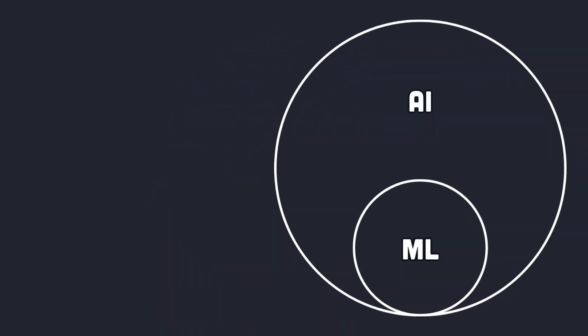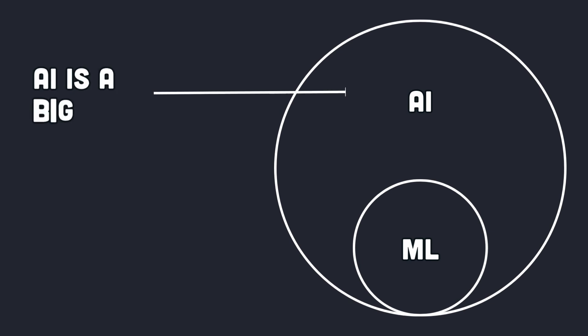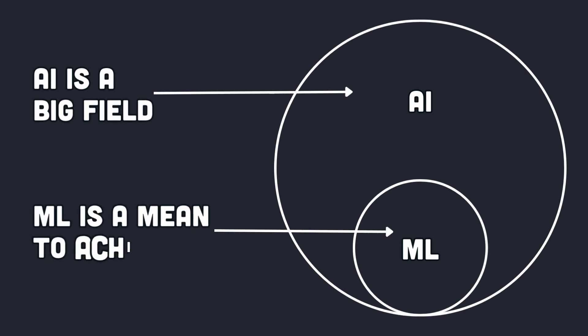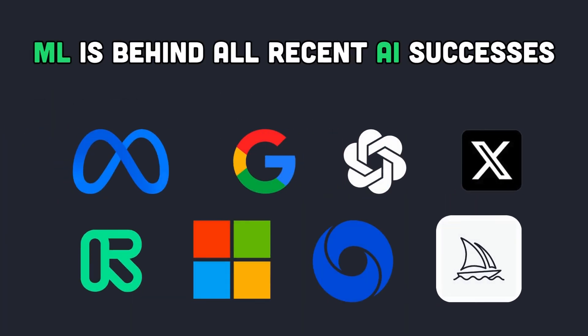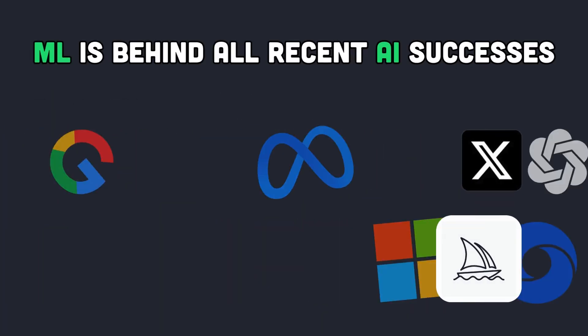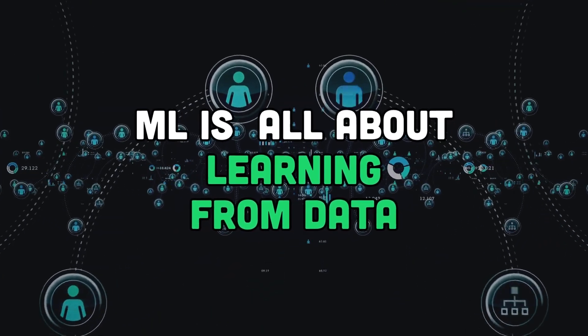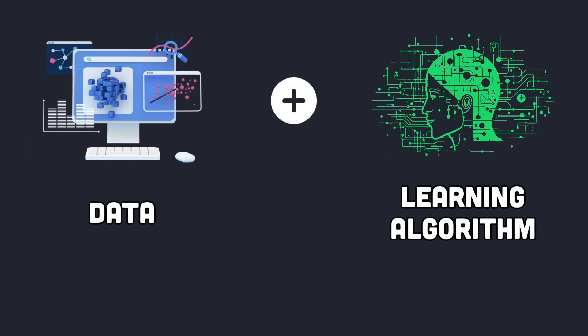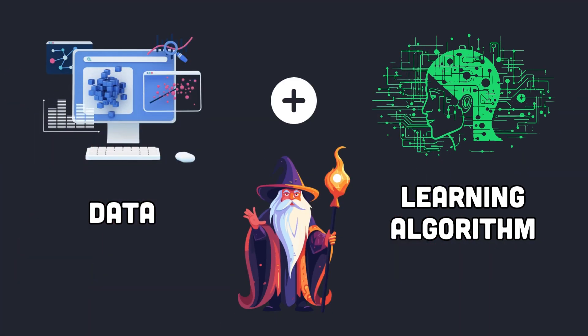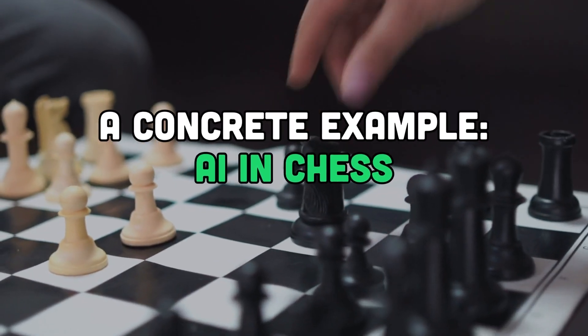Now, machine learning — often referred to as ML — is a subset of AI. It's one technique used to achieve the goal of creating human-like intelligence, but it's not just one approach within AI; it's the powerhouse driving most of today's AI successes. It's all about learning from data: you have data, you have a learning algorithm, and from there, magic happens.